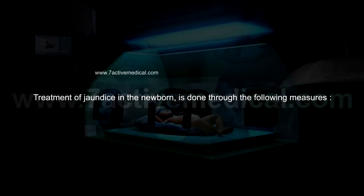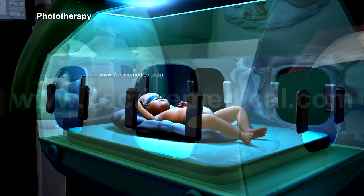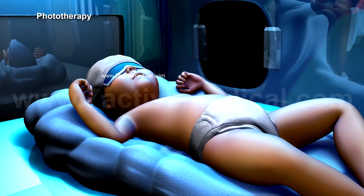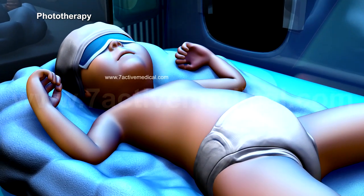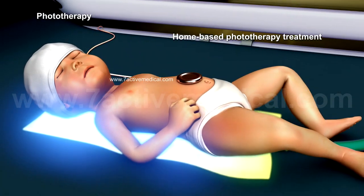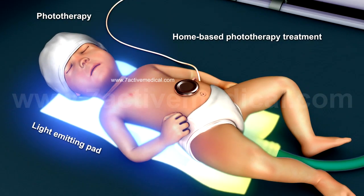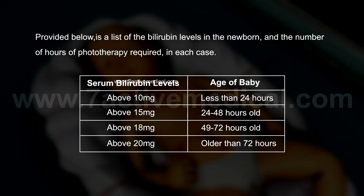Treatment of jaundice in the newborn is done through the following measures. First, phototherapy, which involves the exposure of the newborn's naked skin to blue or white fluorescent light, thereby causing the breakdown of bilirubin in the body for excretion through a process known as photo-oxidation. Home-based phototherapy treatment consists of the usage of a light-emitting pad, mattress, or lamp. Provided below is a list of the bilirubin levels in the newborn and the number of hours of phototherapy required in each case.